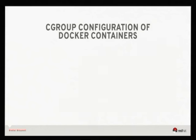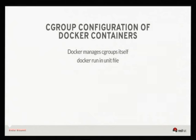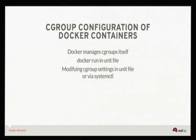cgroup configuration inside Docker containers is another conflict. Docker wants to manage the cgroups, and systemd wants to manage the cgroups. If you put a Docker run in a unit file and set up cgroups in the unit file — memory limits, for instance — that will affect the Docker client only. It will not affect the processes inside the container. Again, because it's a client-server operation.